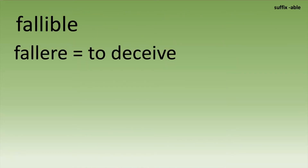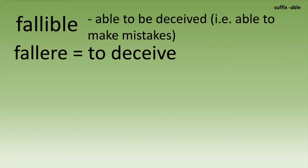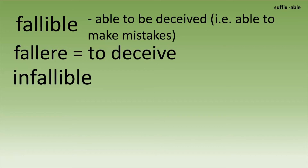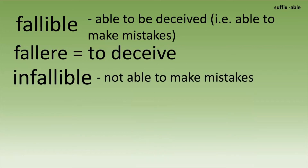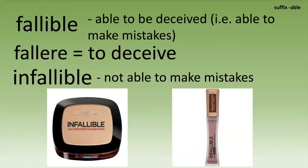'Fallible' comes from the root meaning to deceive, so this is able to be deceived — meaning you can make mistakes, you can be deceived by information or by a person. Most often we hear this word in the negative form 'infallible,' meaning not fallible, not able to be deceived. I saw a line of makeup called Infallible — the idea being that if you use this makeup, you're not going to make mistakes with it. It's going to be perfect on you.